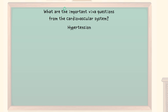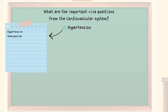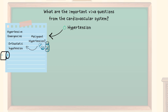You will be commonly asked about hypertensive emergencies. What is malignant hypertension? What is orthostatic hypotension? Which drugs cause orthostatic hypotension? What is the role of alpha blockers and beta blockers in hypertension?